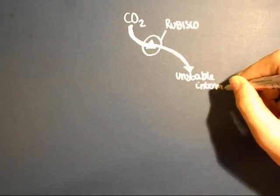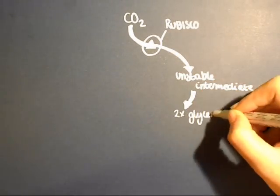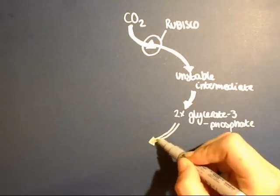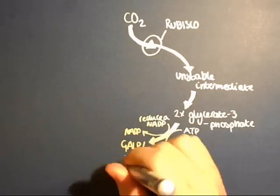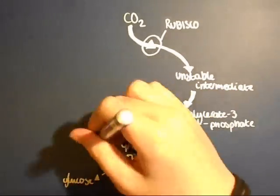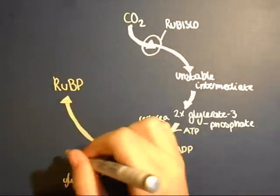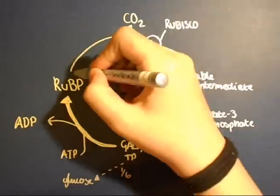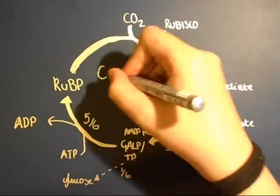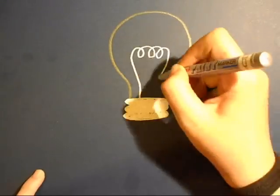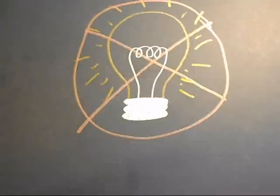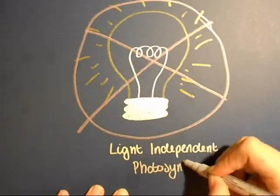Whoa, the Calvin cycle! Whoa, the Calvin cycle! Whoa, the Calvin cycle — light independent photosynthesis. ATP,